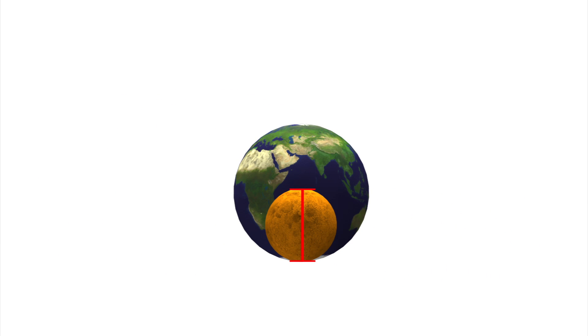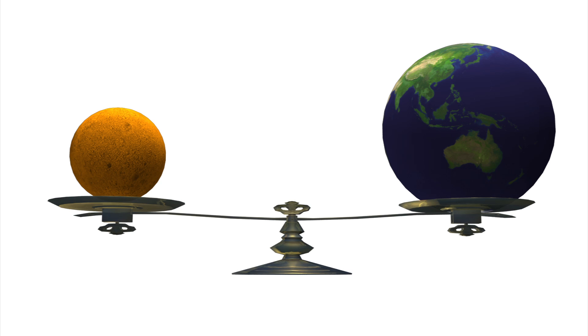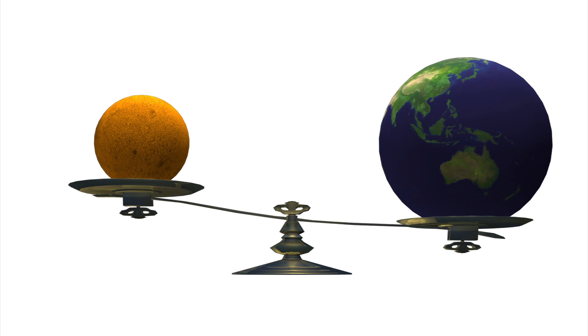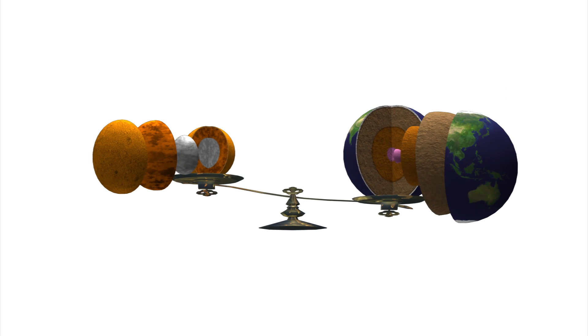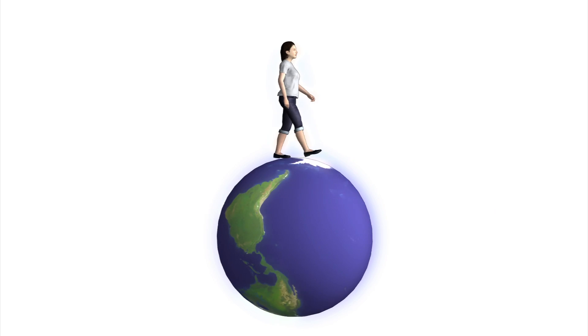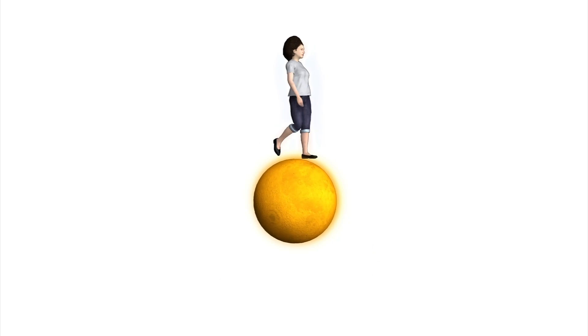Earth is twice the diameter of Mars, 10 times more massive, and 20% more dense. As a result, gravity on Mars is 38% of Earth's gravity.